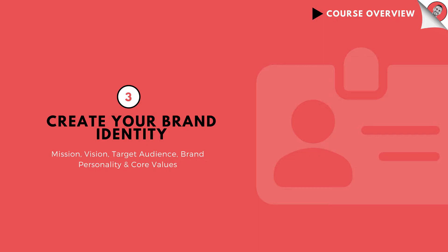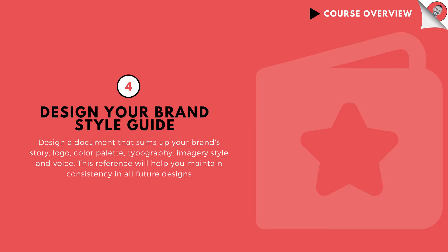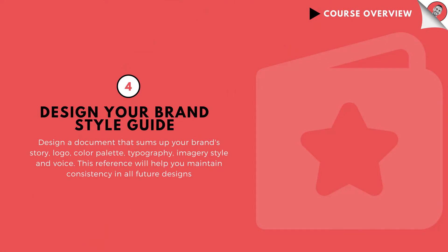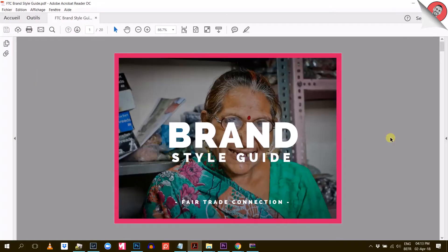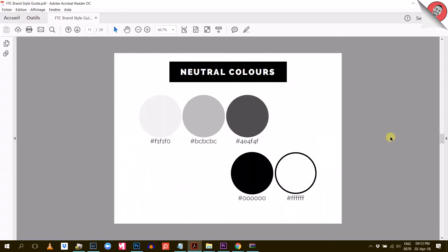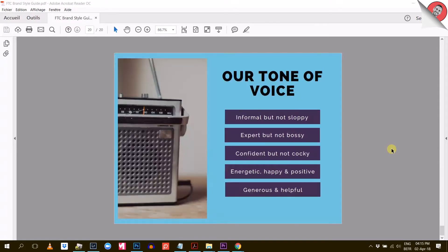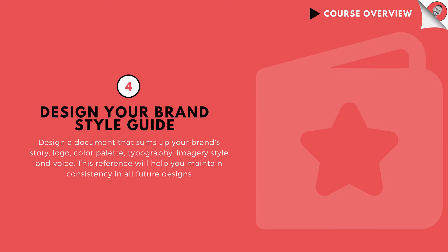Take this section very seriously. Use it to develop your brand identity and only then move on to the next section. In section four, we will actually start designing. To make sure you get the best out of this course and end up with the visuals you actually need for your business, I will ask you to start by designing your brand style guide. A brand style guide is a reference document that sums up your brand story, your logo, your color palette, your typography, imagery, style, and tone of voice. It's basically the heart and soul of your brand translated into design.